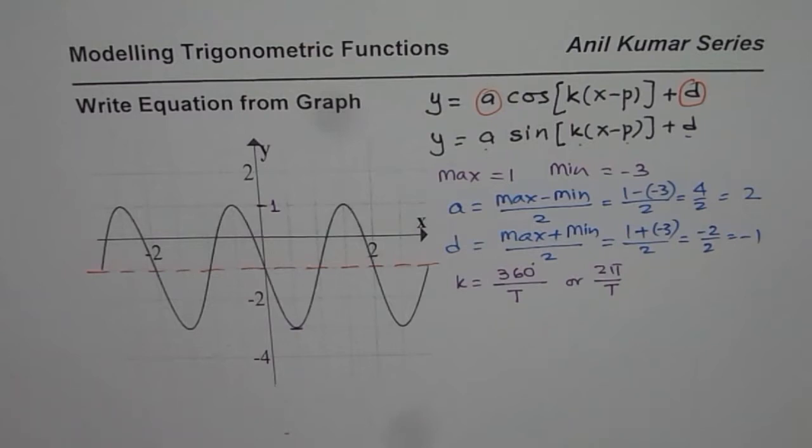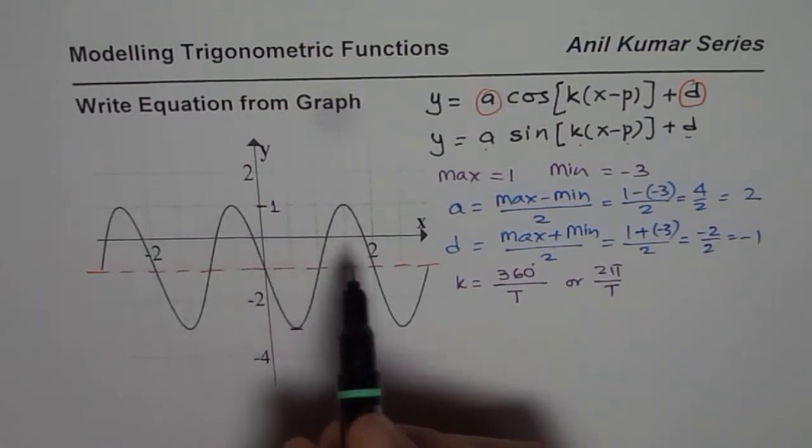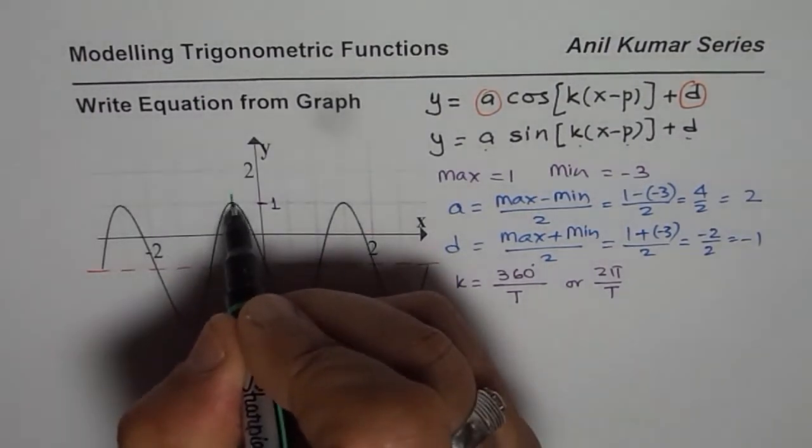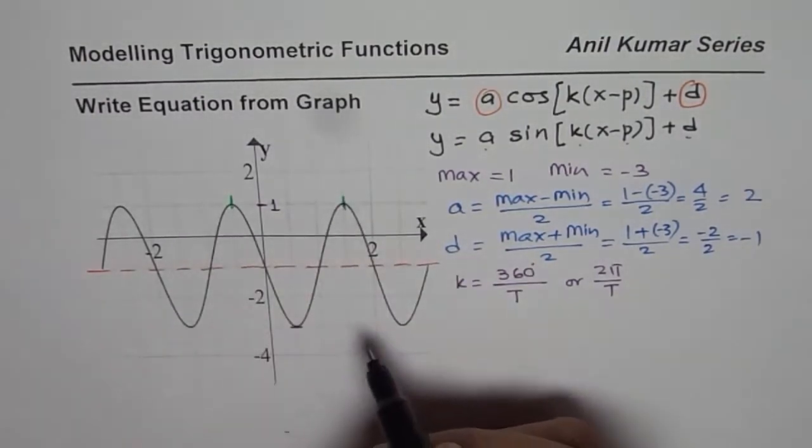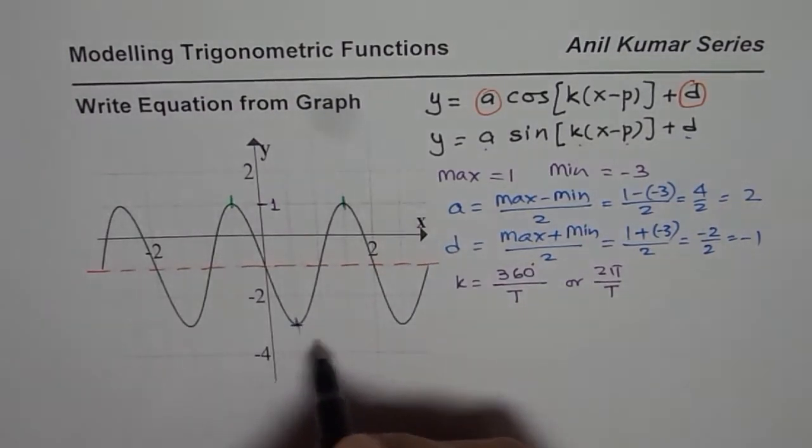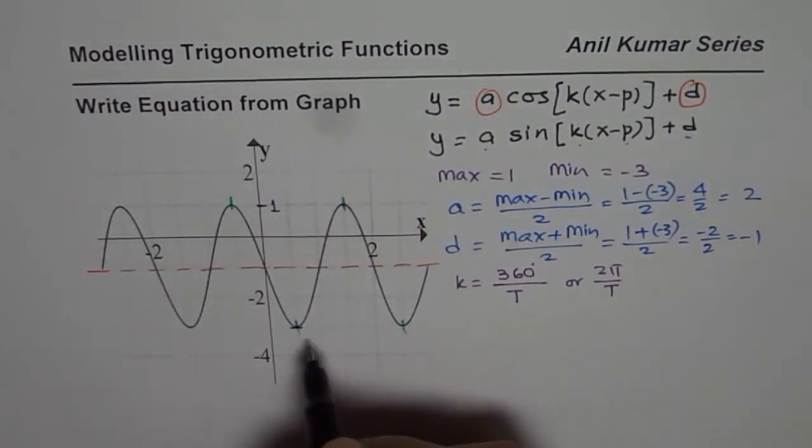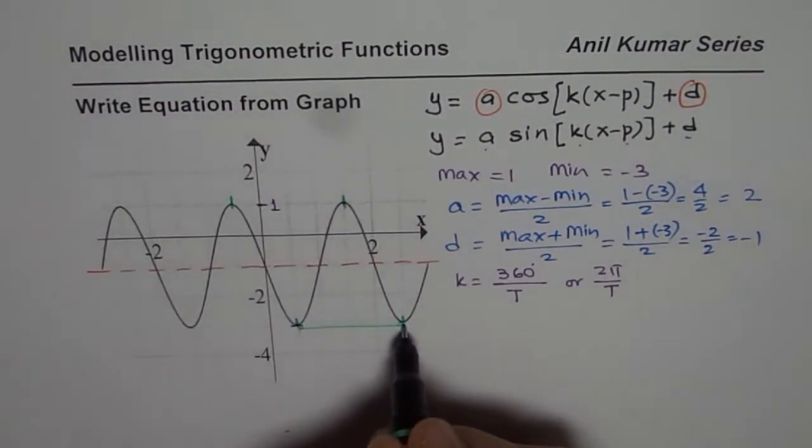Now time period is the horizontal distance for one full cycle. One full cycle you could see, a good point to check is always 2 maximums or 2 minimums. So let us consider the 2 minimums at this time.